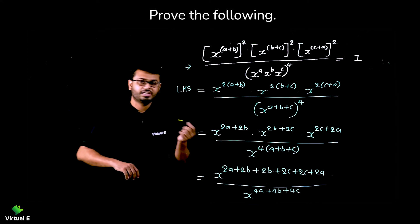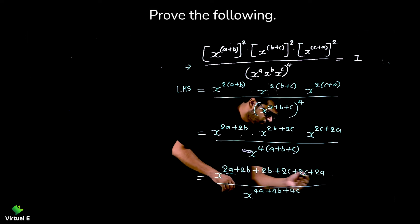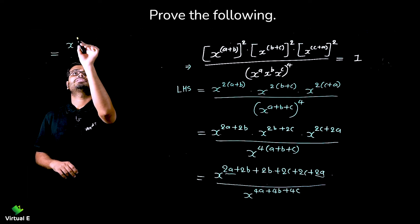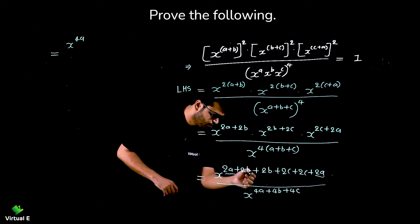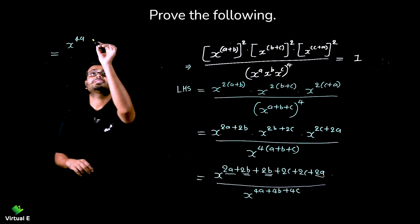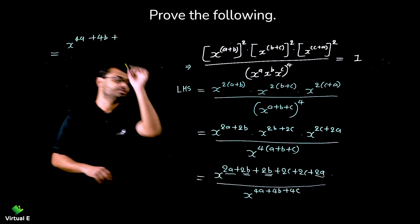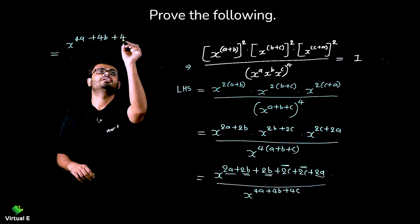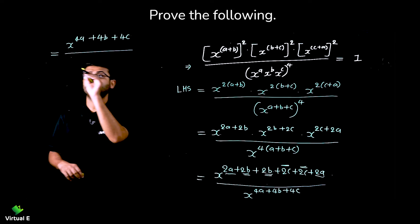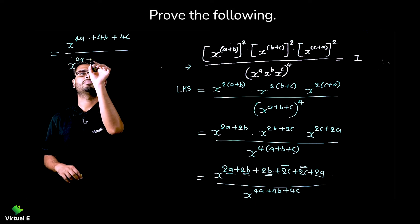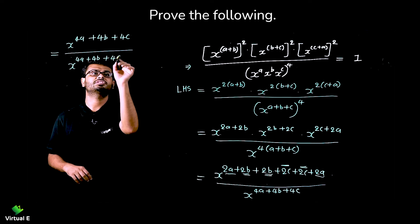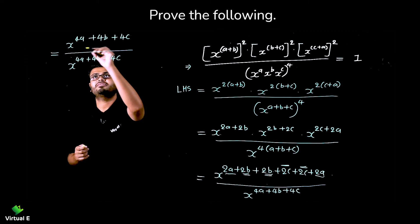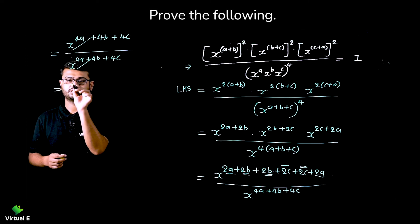So adding the numerator powers: X raise to 2a plus 2b plus 2b plus 2c plus 2c plus 2a. Now observe: 2a and 2a make 4a, 2b and 2b make 4b, 2c and 2c make 4c. So the numerator is X raise to 4a plus 4b plus 4c, and the denominator is X raise to 4a plus 4b plus 4c. Now the numerator and denominator are equal, so if we cancel them we get the answer 1.